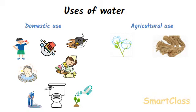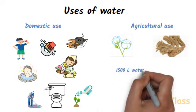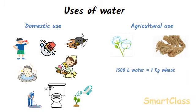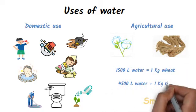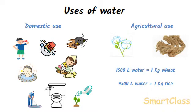This we can understand from the fact that about 1500 liters of water is needed to produce 1 kg of wheat grains from the wheat plants. 4,500 liters of water is required to grow paddy plants which finally produce 1 kg of rice grains.